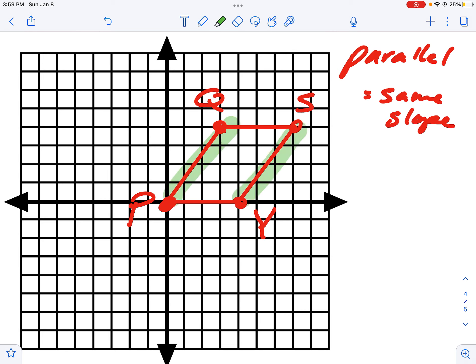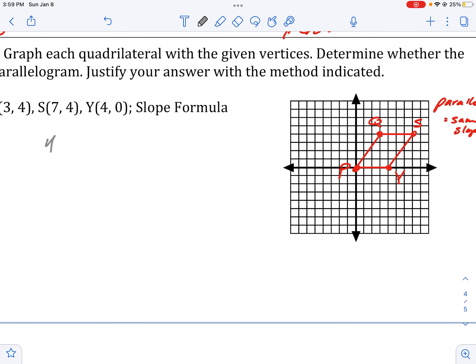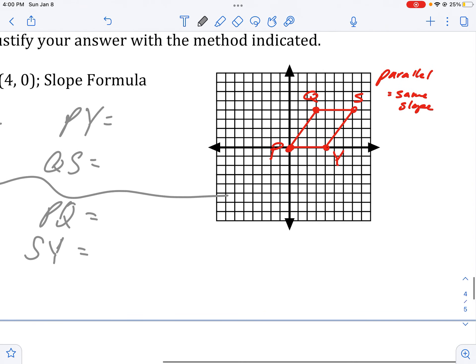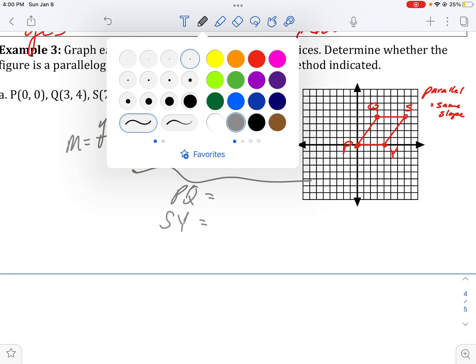I need to check if these two lines have the same slope and if these two lines have the same slope. So I need to use the slope formula, the Y2 minus Y1 over X2 minus X1. And I need to check out PY, QS, PS, PQ, and SY. And I need to make sure that these two pairs of lines are parallel. So why don't you pause the video, do your slope formula, see what you get, and then see if we can claim that these are parallel lines.